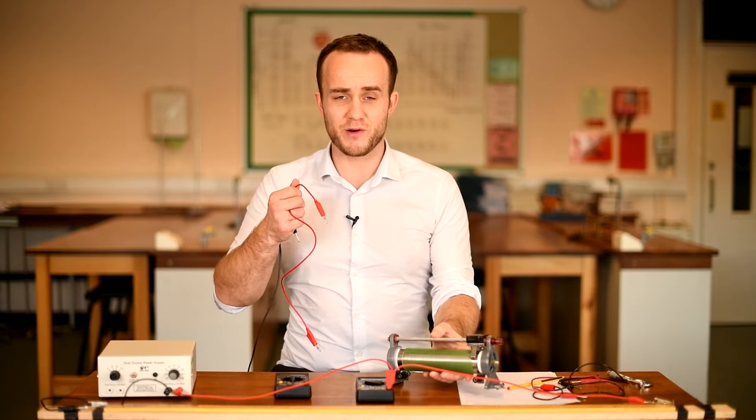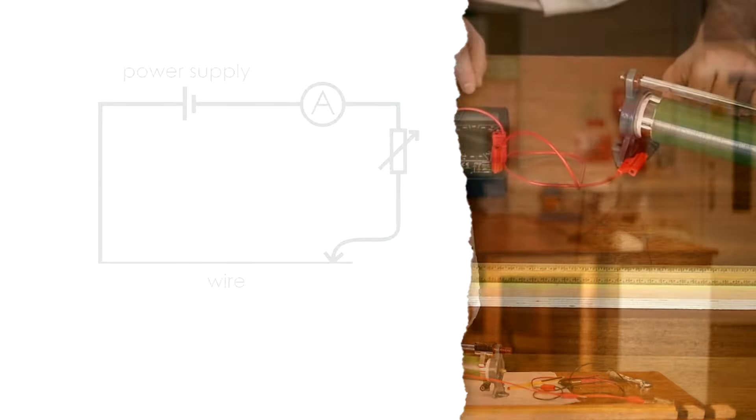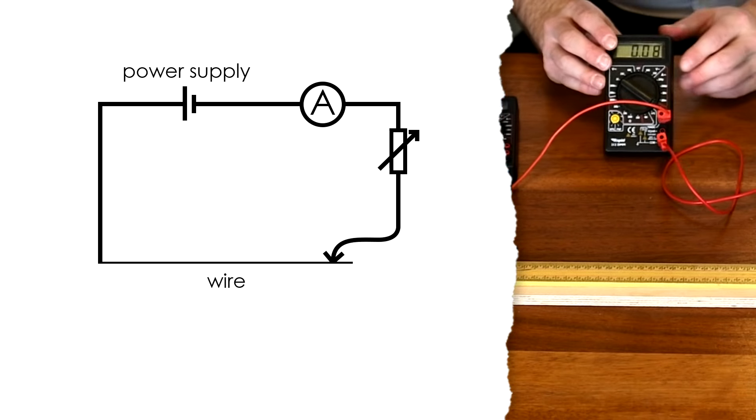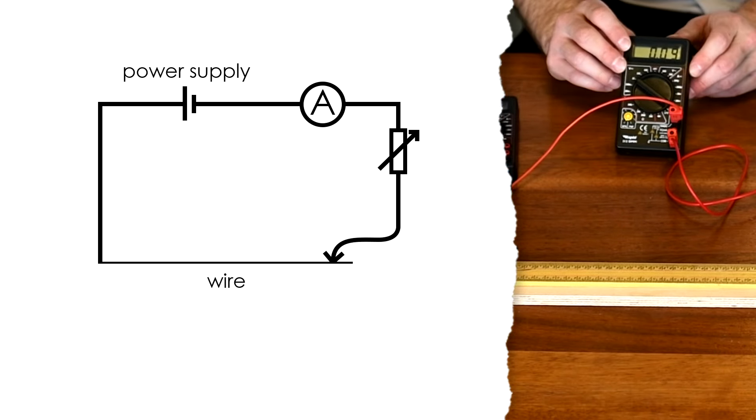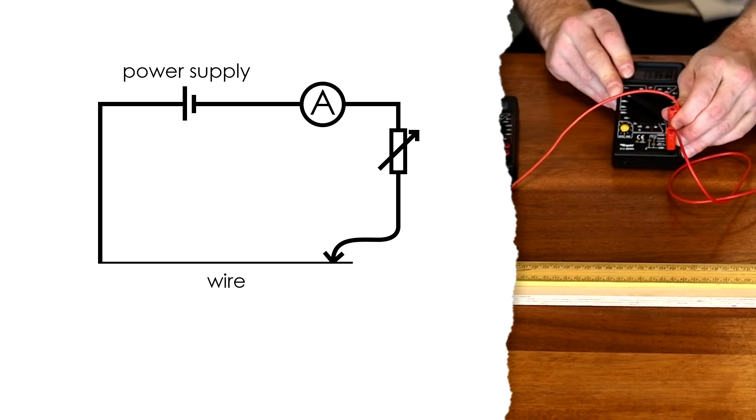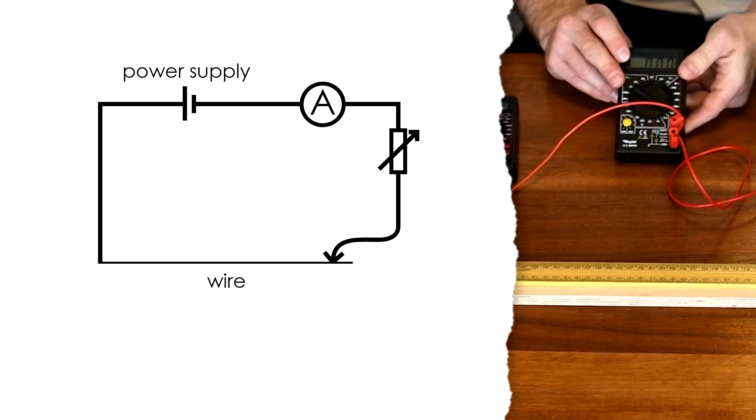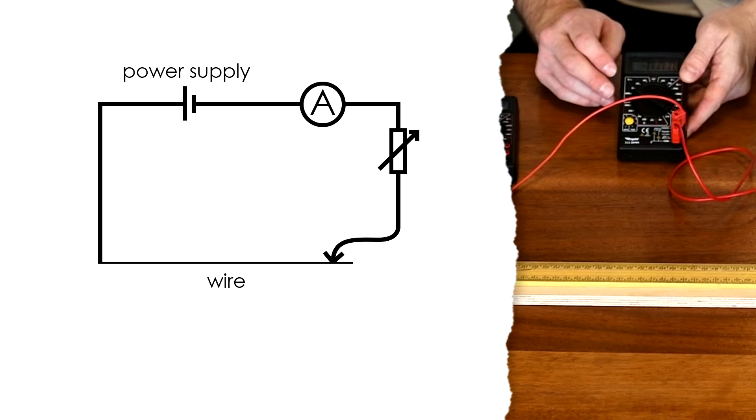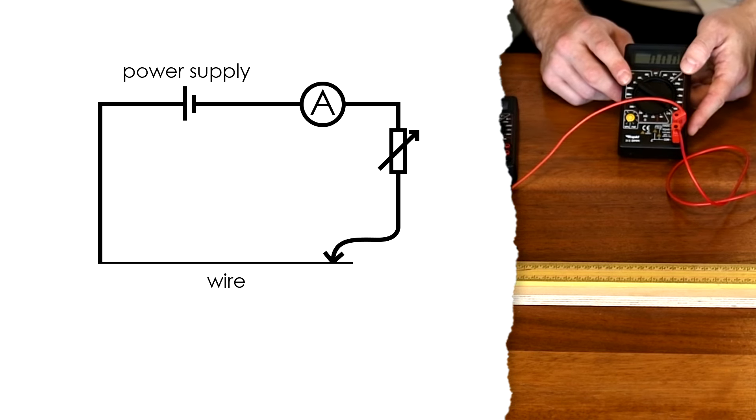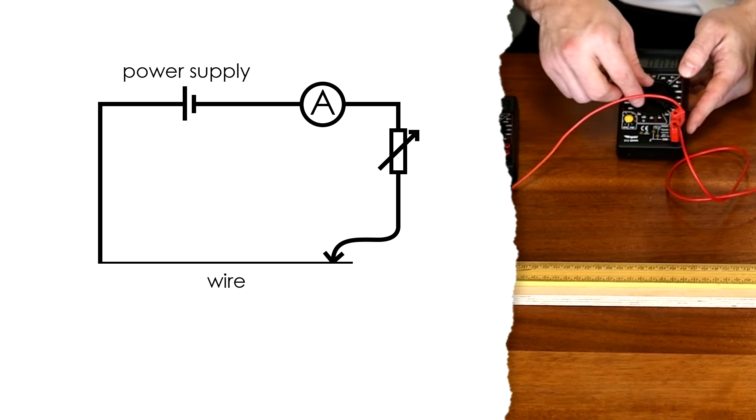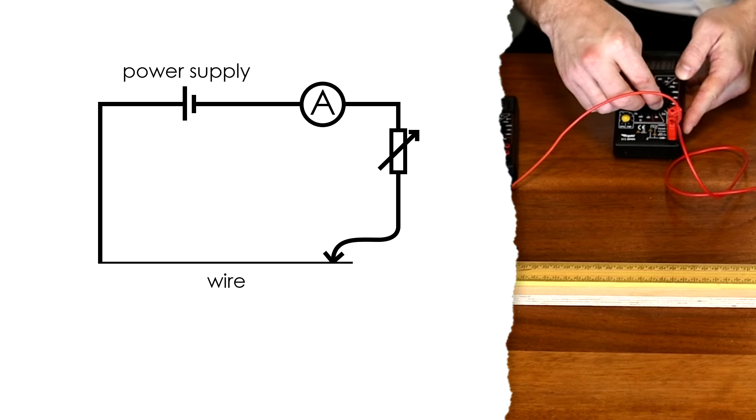If the temperature rises then that means that the resistivity is going to change as well. So I now have a variable resistor, I'm just going to add that into my circuit as well. Now we have a much smaller current, that's what we want because we ideally want to measure the current to three sig figs to make sure there's less uncertainty.